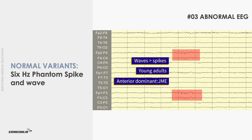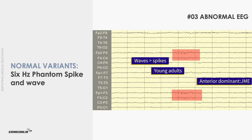It is seen in young adults during drowsiness. Two different forms of 6 Hz spike and wave discharges have been described: anterior dominant and posterior dominant. While the posterior dominant variety is considered benign, the anterior dominant variety may sometimes be associated with juvenile myoclonic epilepsy.